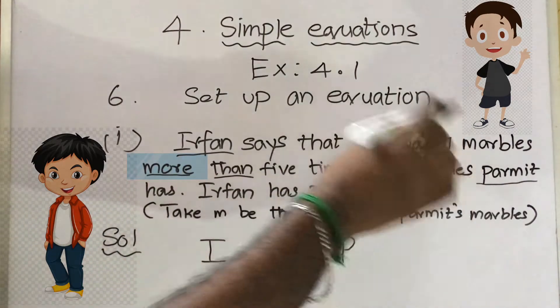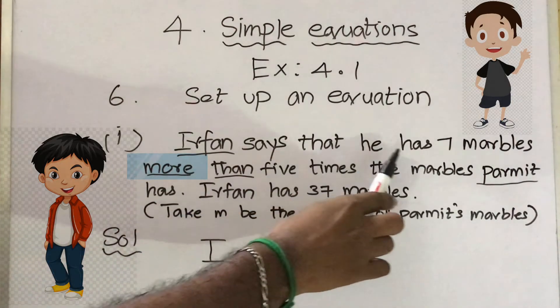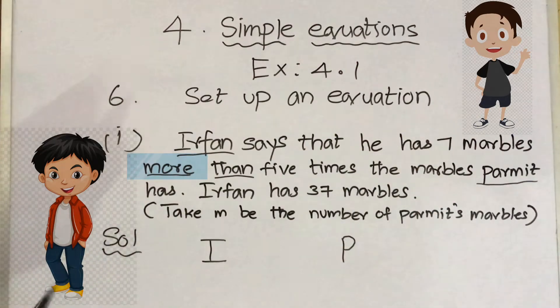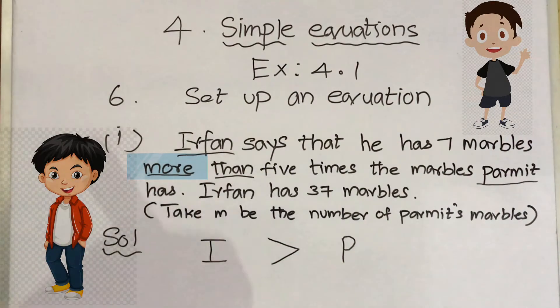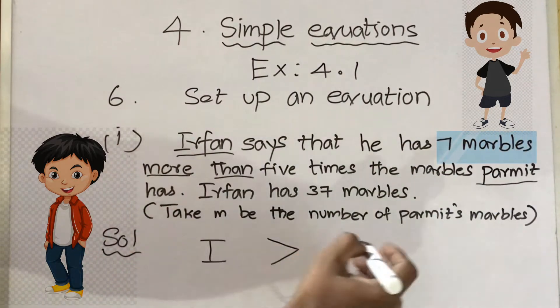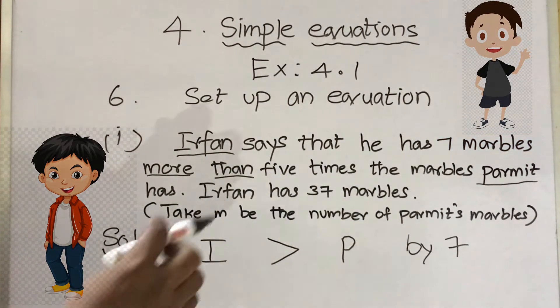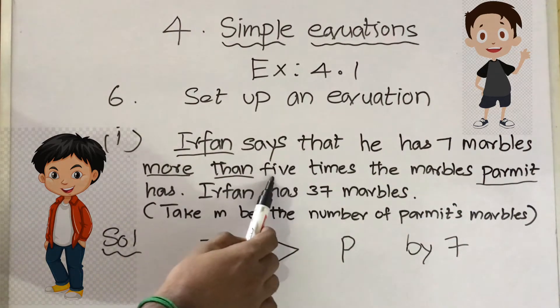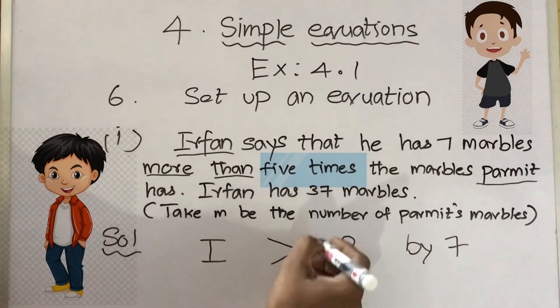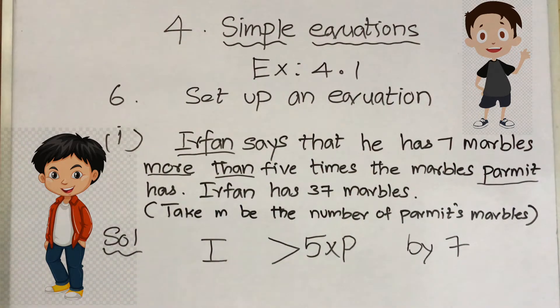more than five times the marbles of Parmit. In this statement first we have to know who is having more. Irfan says that he has seven marbles more than the marbles of Parmit, so Irfan is greater. Write the greater than sign facing Irfan: I. Now how much is greater? Irfan says that he has seven marbles more, so seven. Next step: seven marbles more than five times the marbles of Parmit. Five times means multiply, so 5 × P. Parmit is P. First we have to form the inequality: I > 5P + 7.